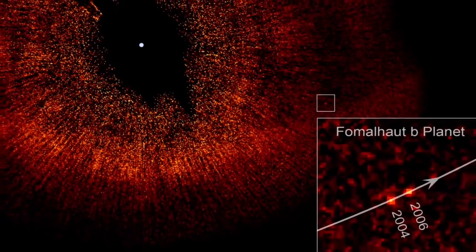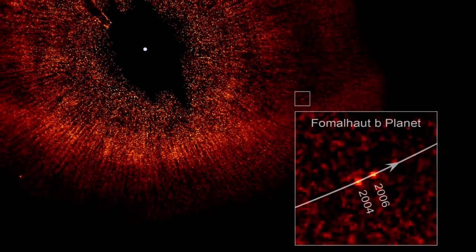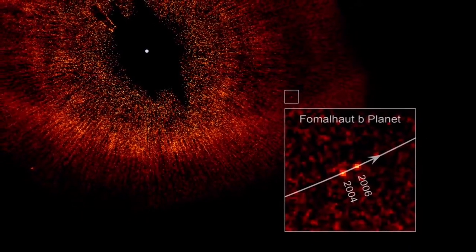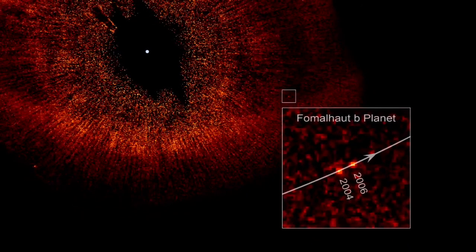This time, Hubble has given us a rare direct image of an extrasolar planet, and what's more, the first in visible light, the type our eyes naturally see.